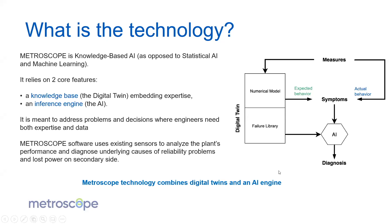On the right here you have a synthetic view of how we work. Everything relies on the measurements we get from the plants. We feed the measurements to a numerical model of the plants — that's what I'm going to talk about today. From that, we get an expected behavior that we can compare to the actual behavior from the measurements, and we get symptoms. At Metroscope, we go one step further: we want not only to find symptoms, but to do root cause analysis — going back to the cause of a symptom and being able to tell our customer that, for instance, there is a leak in a valve or a heat exchanger that's not working correctly, and then maintenance can take over.